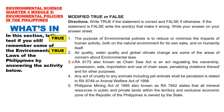Number 3: RA 9175, also known as the Chainsaw Act, is an act regulating the ownership, possession, sale, importation, and use of chainsaws, penalizing violations thereof and for other purposes. Answer: true.